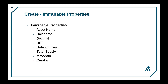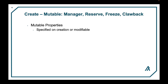There are four mutable properties corresponding to addresses that can authorize specific functionality for an asset. These addresses must be specified on creation, but they can also be modified after creation. Alternatively, these addresses can be set as empty strings, which will irrevocably lock the function they would have had authority over. These properties include manager, reserve, freeze, and clawback addresses. These addresses can be normal Algorand accounts or smart contracts, allowing the ASA to be controlled with decentralized logic.